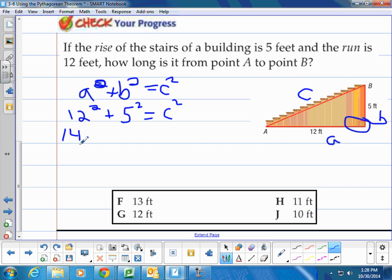12 squared is 144. 5 squared is 25. You can use your calculator. And that's going to be equal to the hypotenuse of the stairs squared. Adding these together, I end up with 169 is equal to C squared. To find out what C is alone, I must take the square root. And again, I would get that positive or negative. 13 is equal to C. Since this is a word problem, it has a value, and my answer is going to be F, 13 feet.